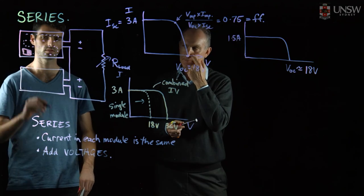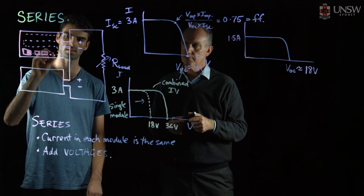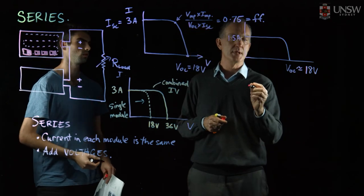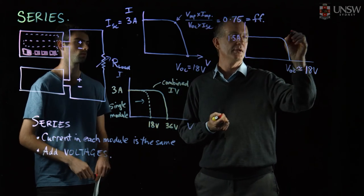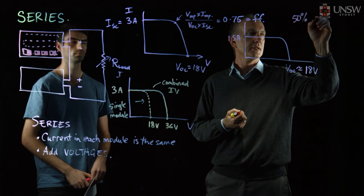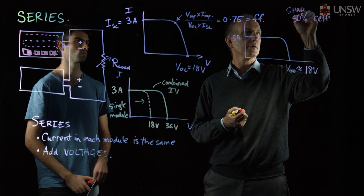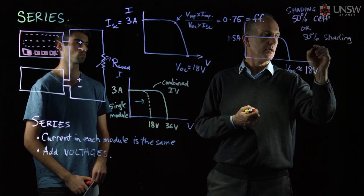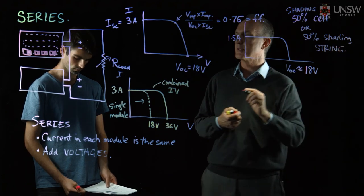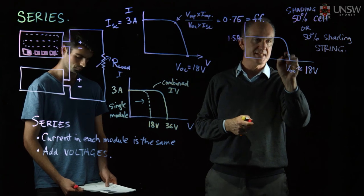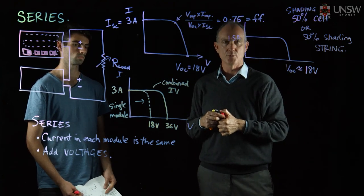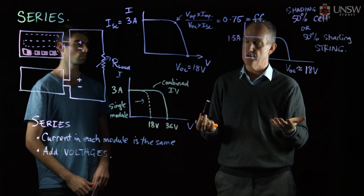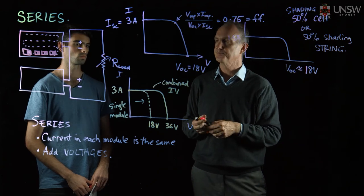If an entire row of cells in the module is shaded by 50%, how would that affect the curve? If 50% shading covers a whole string of cells connected together, that string is shaded by 50%, reducing the current by half for the whole string. Because the rest of the cells in the module are connected in series, the whole module output is reduced by 50%.